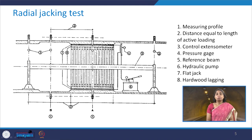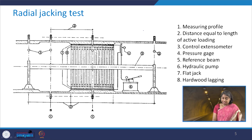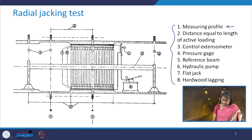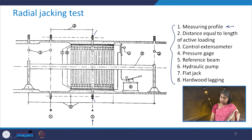This is what the line diagram of the radial jacking test typically looks like. The various components listed correspond to what is shown in the figure. The first one is the measuring profile, and the extensometers have been installed there.